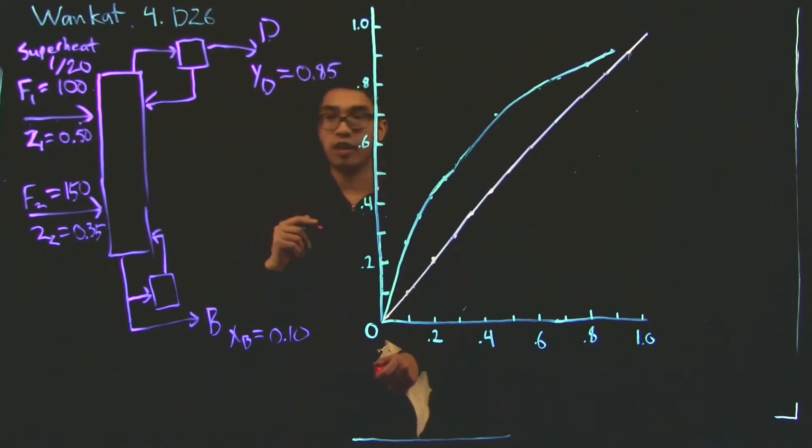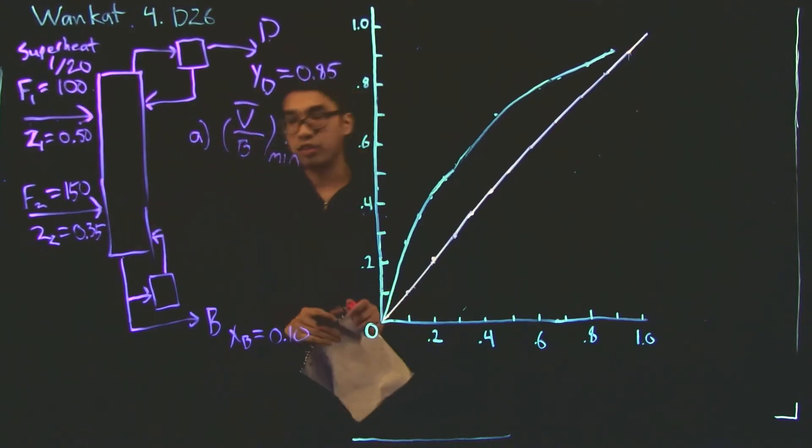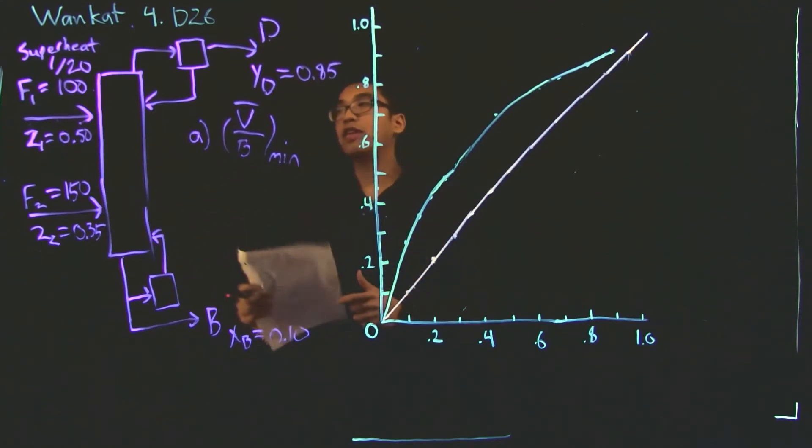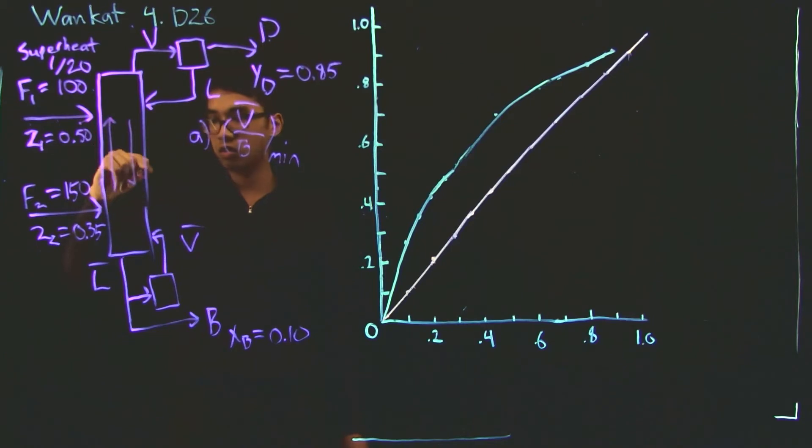Now, what we're tasked finding is the V bar over B ratio, the minimum ratio. To do that, we need to find all the internal flow rates. So let's start by just labeling everything. So here we have V. Here we have L. And then for the bottom, we're going to use V bar and L bar. And obviously, we have B. And because we have two feeds, in between the two feeds, there's going to be a first set of internal streams, which we'll label V prime and L prime.